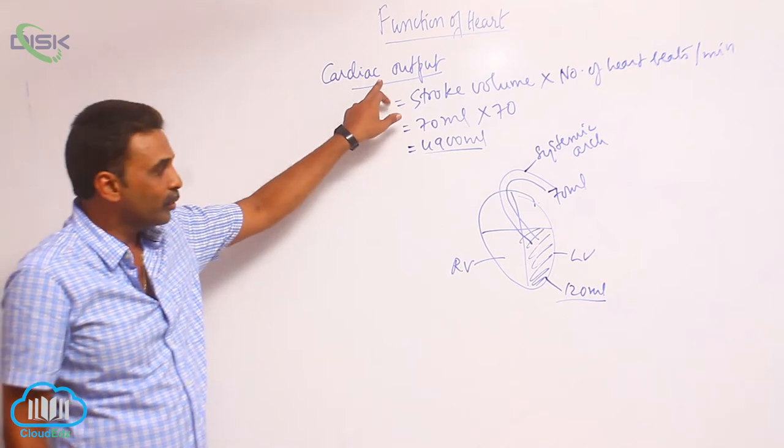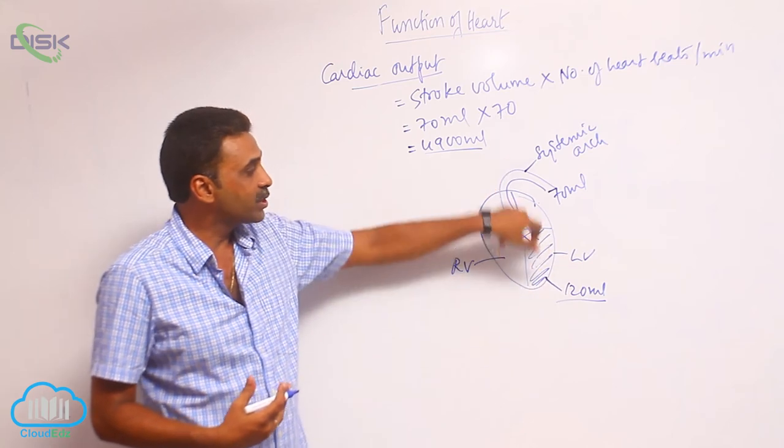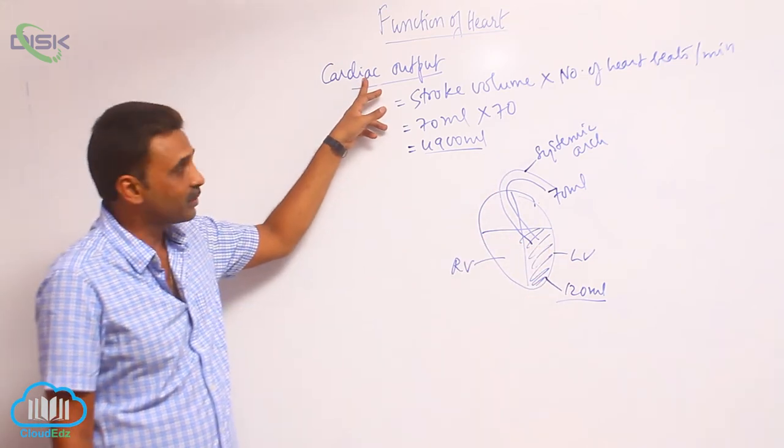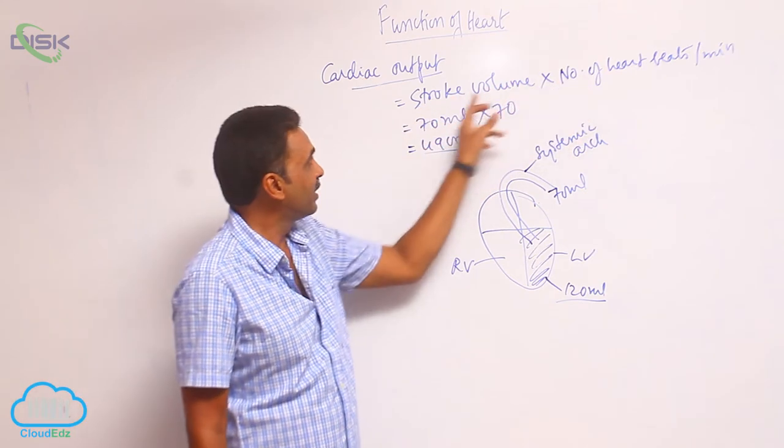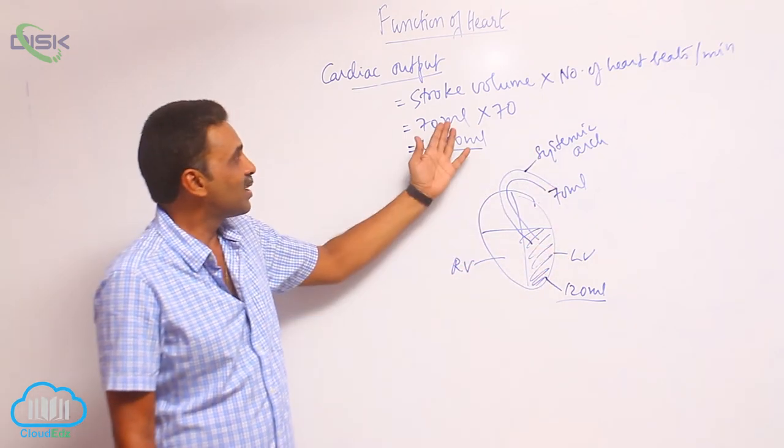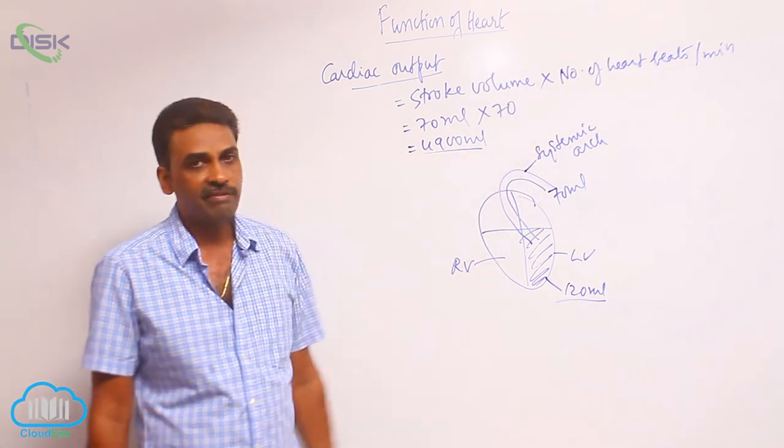Cardiac output means from each ventricle, the amount of blood pumped outside by each ventricle in one minute. It is equal to stroke volume times number of heartbeats per minute. Stroke volume means during one heartbeat how much blood is pumped outside - that is around 70 ml. Number of heartbeats is 70, so it is roughly 5 liters.